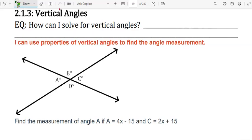So let's go ahead and label those on our picture: 4x minus 15 and 2x plus 15. These are vertical angles, and so they are equal to each other.